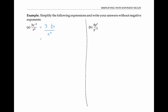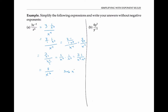Now, if we think of 3 as 3 over 1, we have a product of two fractions in our numerator, and we evaluate that by taking the product of the numerators times the product of the denominators, which is 3 over x squared, all divided by x to the fourth. Thinking of x to the fourth as x to the fourth over 1, I have a fraction over a fraction, which I can evaluate by multiplying by the reciprocal. That simplifies to 3 times 1 divided by x squared times x to the fourth, which is 3 over x to the sixth, using the product rule, since x squared times x to the fourth equals x to the 2 plus 4, or x to the sixth.